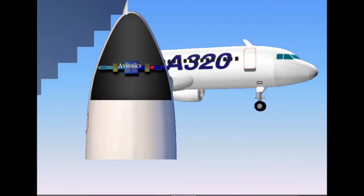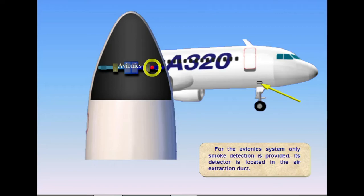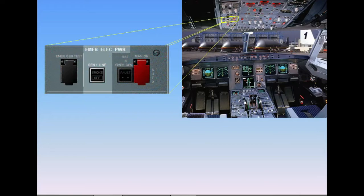For the avionic system, only smoke detection is provided. Its detector is located in the air extraction duct. The indications for avionic smoke are located on two panels in the cockpit: the emergency electric power panel and the ventilation panel.